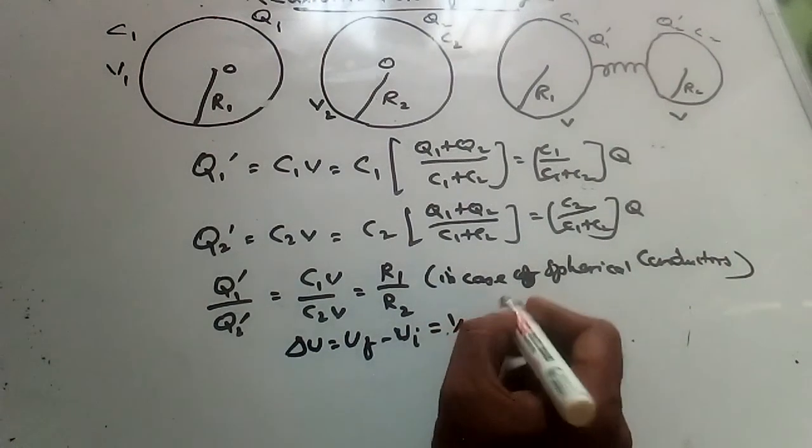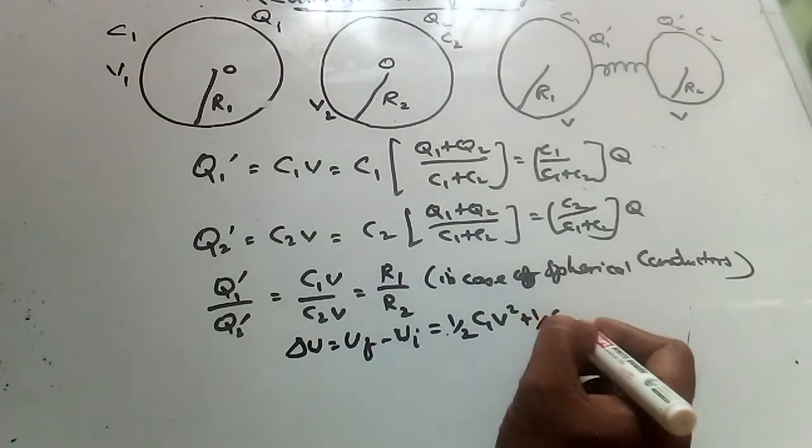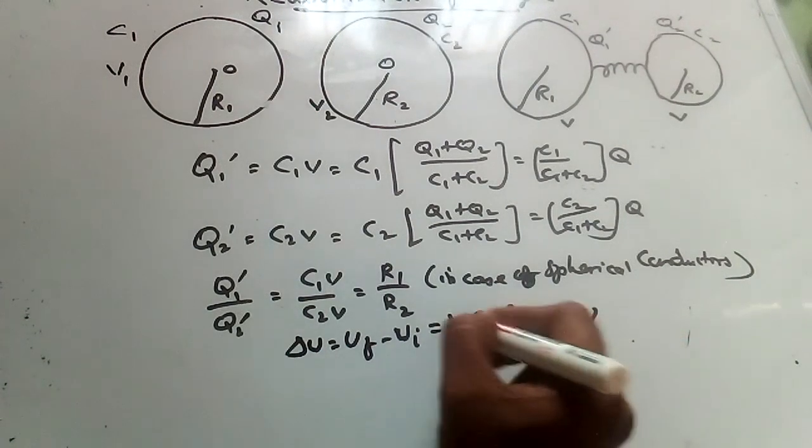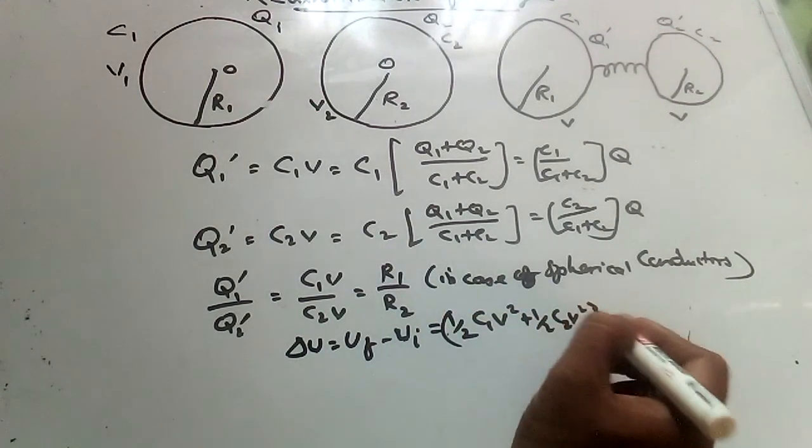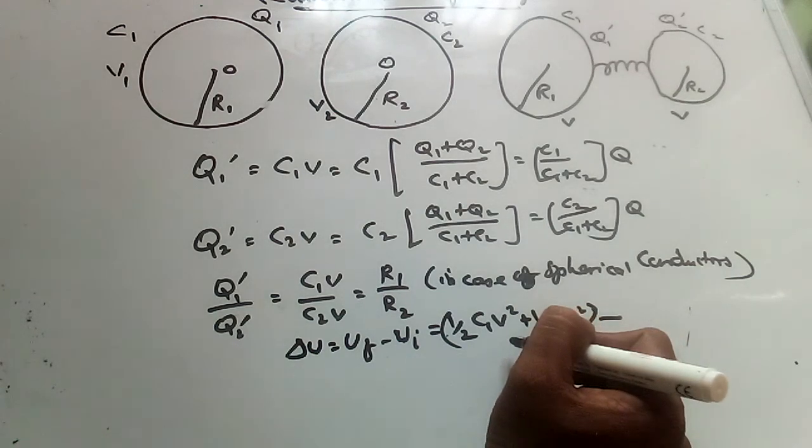Then 1 by 2 C1 V square plus 1 by 2 C2 V square. This is final energy because they have common potential. So 1 by 2 C V square is the general formula.